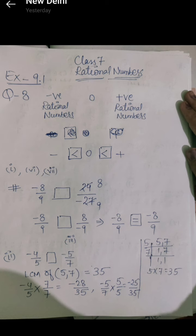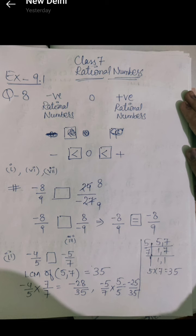Let me solve the second part for you. Second part has: -4/5 box -5/7. We need to compare these two. First, as I said, we check if we can reduce them to simplest form. We cannot — there is no common factor. So what we will do is make their denominators equal. The denominators are not equal — one is 5 and one is 7. To make denominators equal, we always find the LCM. I find the LCM of 5 and 7: 5 goes into the table of 5 as one five; 7 does not appear in the table of 5, so it is written as is. Since we get 1 and 1, we stop. The LCM is 5 × 7 = 35.